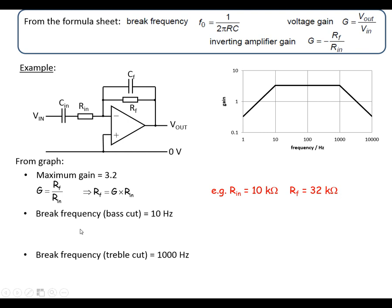Let's look at the break frequency for the bass cut, and then we can work out what the input capacitor is going to be. So the input capacitor is going to be 1 over 2πRF, so we're using the input resistor which is now 10 kΩ, and we've got 10 Hz for the break frequency. If we put these values in, we'll end up with the input capacitor being 1.6 µF.